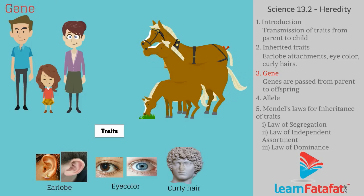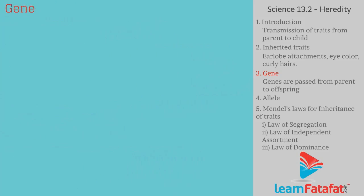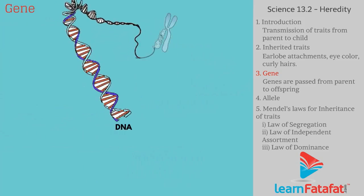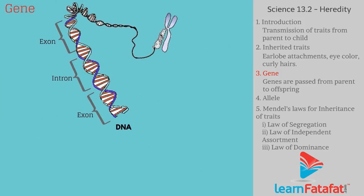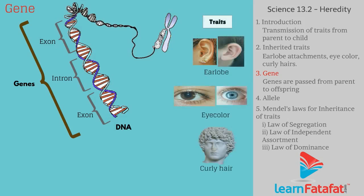Gene: DNA contains specific sections which contain information to synthesize proteins. Such sections are called genes. Genes are responsible for traits in an organism and are passed from parent to offspring.